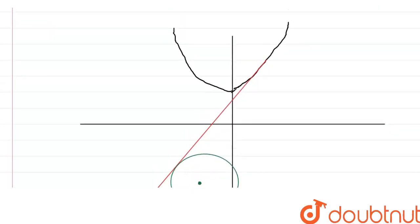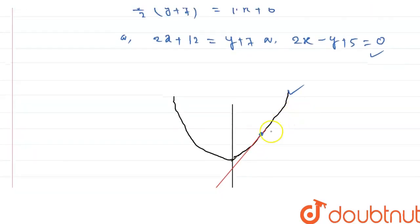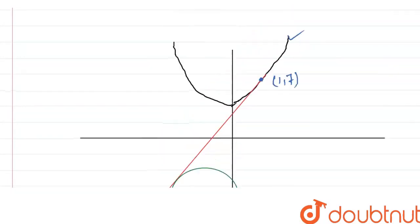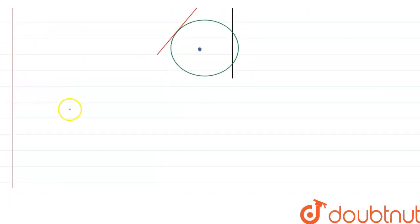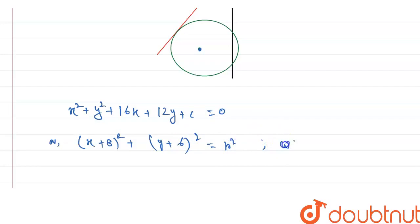So, now we draw a picture. Here, that is the equation of the parabola, and this is the equation of the tangent at the point (1, 7). This is the point (1, 7), and that tangent touches the circle. So, the equation of the circle is x² + y² + 6x + 12y + c, which equals 0. In the general form of the circle, we have (x + 8)² + (y + 6)² = r², where r² = 100 - c.